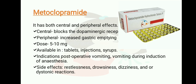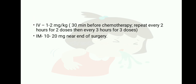Indication: post-operative vomiting and vomiting during induction of anesthesia. Side effects: restlessness, drowsiness, dizziness, and extradystonic reactions. Metoclopramide blocks the dopamine D2 receptor and increases the tone of the lower esophageal sphincter, promoting gastric emptying. IV dose: 1 to 2 mg per kg, 30 minutes before chemotherapy, repeated every 2 hours for 2 doses, then every 3 hours for 3 doses.